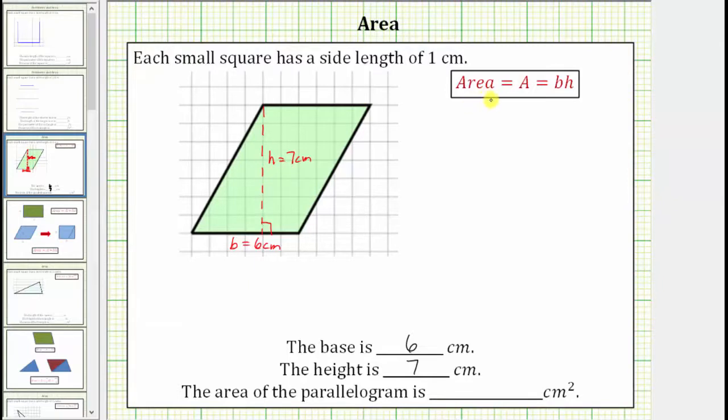The area formula for a parallelogram is area equals base times height, which means for this parallelogram, the area A equals six centimeters times seven centimeters. Because six times seven is equal to 42, the area is 42 square centimeters. Exactly 42 square centimeters will fit inside the parallelogram.